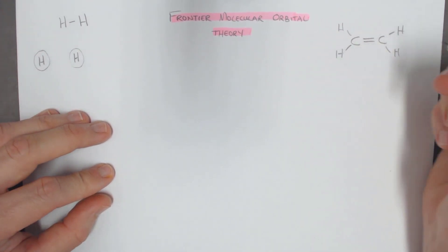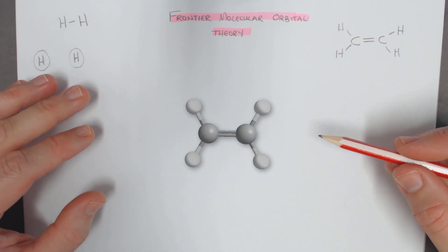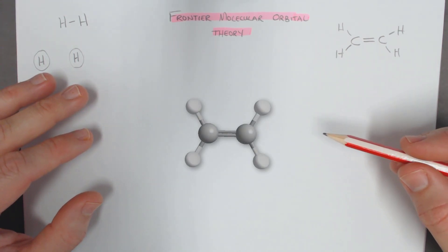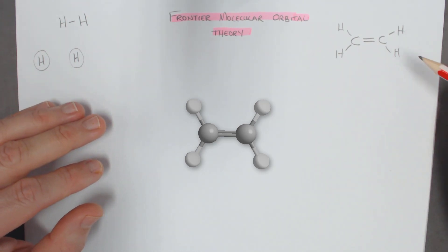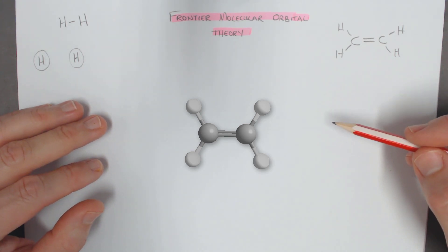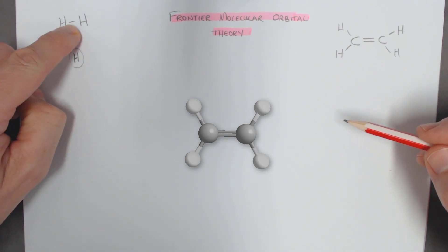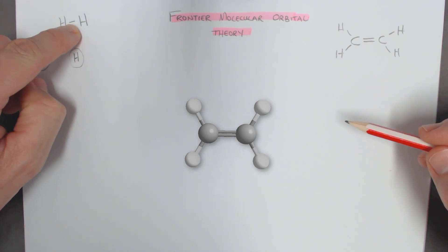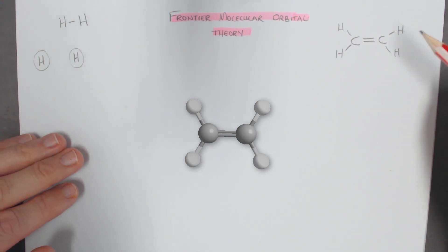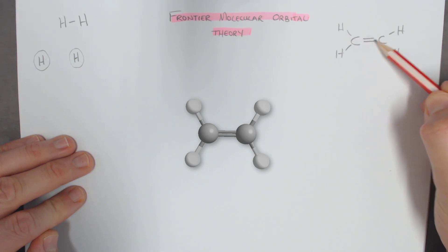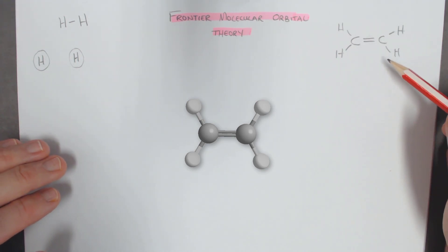We're now going to look at the molecular orbitals of ethylene. Here's the 3D model up in front of me, and I'm now going to show you the molecular orbitals. I wonder if you can guess how many molecular orbitals there would be. Well, if you remember, one bond actually represents two molecular orbitals, because there's one bonding and one antibonding. So if we look here, we've got six bonds in total. That means there are actually 12 molecular orbitals.